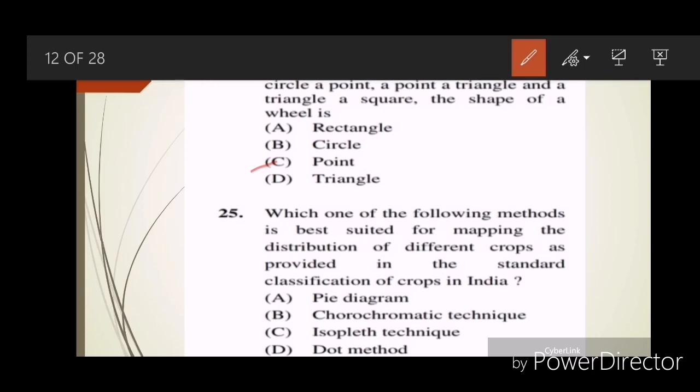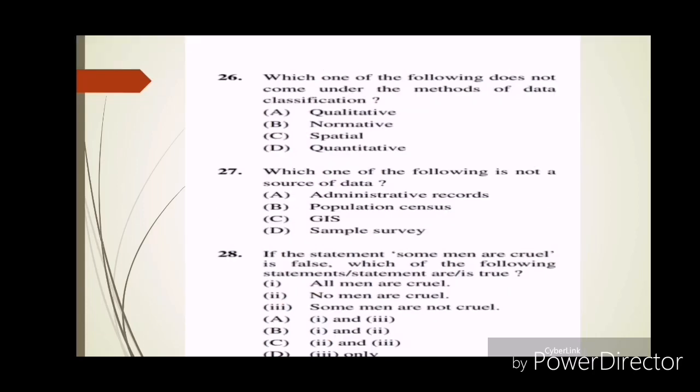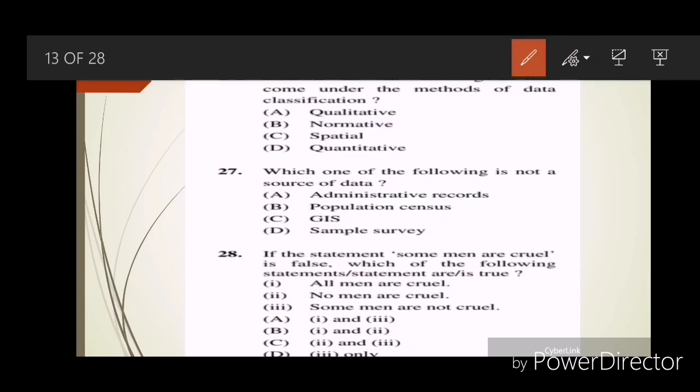Question twenty-five: Which one of the following methods is best suited for mapping the distribution of different crops as provided in the standard classification of crops in India? Answer B. Question twenty-six: Which one of the following does not come under the method of data classification? Answer C, spatial. Question twenty-seven: Which one of the following is not a source of data? Answer A, administrative records. Question twenty-eight: If the statement 'some men are cruel' is false, which of the following statements are true? Answer is D, 3 only.